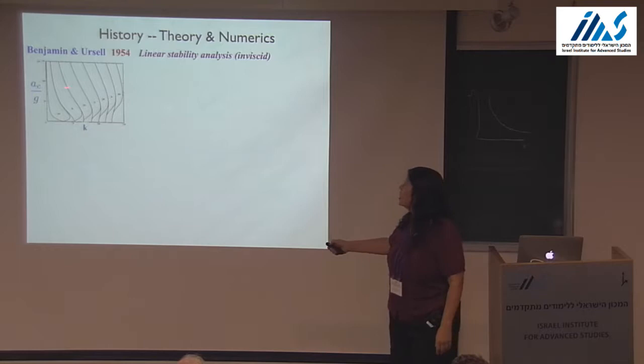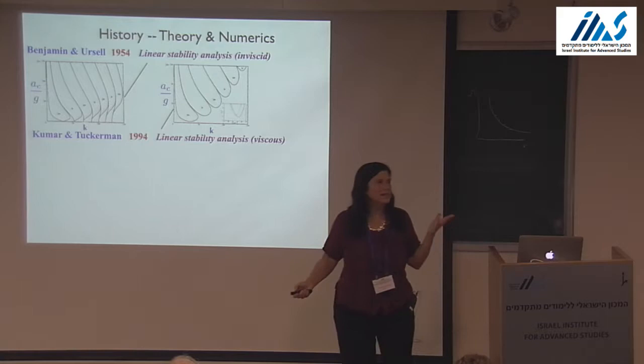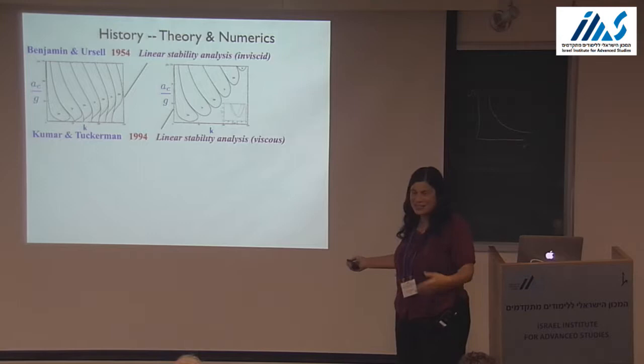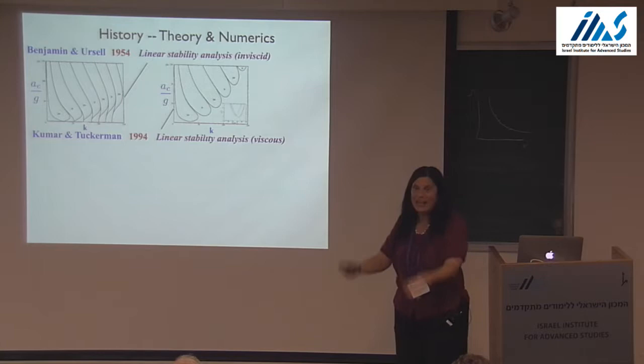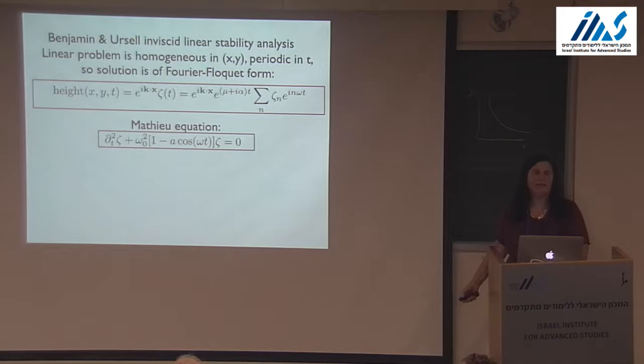Continuing the history of the Faraday instability: this is the diagram that Benjamin and Ursell produced for the inviscid case. Because Faraday waves were so little studied, it was my good fortune to do the first linear instability analysis with viscosity. Viscosity damps the instability — you need to shake it higher to make the tongues happen, and they separate. These are harmonic, sub-harmonic, harmonic, etc. tongues. That was 40 years after Benjamin and Ursell.